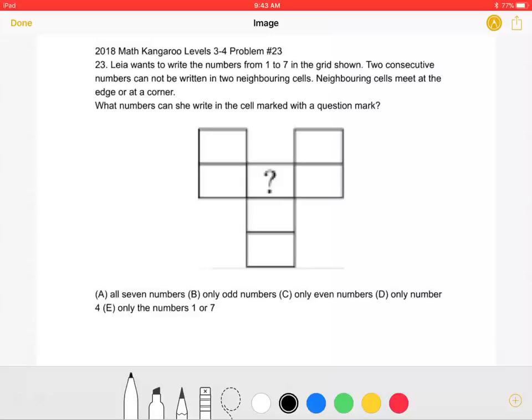Leah wants to write the numbers from 1 to 7 in the grid shown. Two consecutive numbers cannot be written in two neighboring cells. Neighboring cells meet at the edge or at a corner.